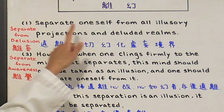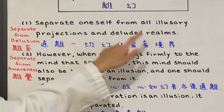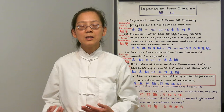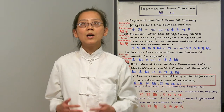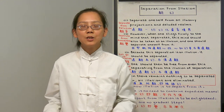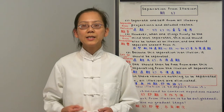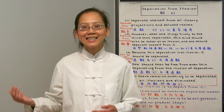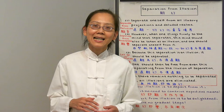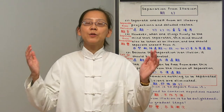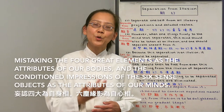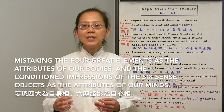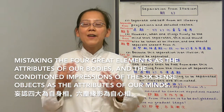Step 1: To separate oneself from all illusory projections and deluded realms. This world that we live in is merely a projection of images from our own Alaya consciousness. All that is created by our mind is merely an illusion. This sutra uses the metaphor of a man with the illness of the eyes who sees an illusory flower in the sky. The sickness of the eyes symbolizes our ignorance, and the illusory flower means our attachment to the 4 great elements as attributes of our bodies and the condition and impression of the 6 sense objects as attributes of our minds.